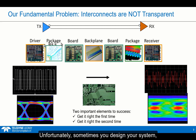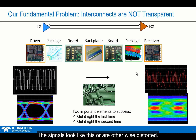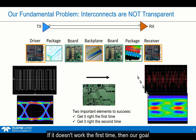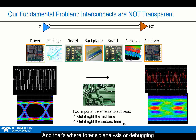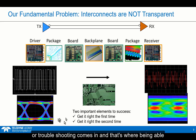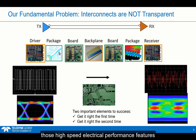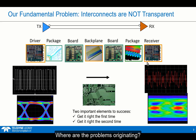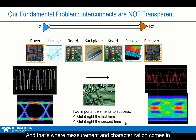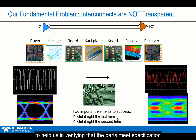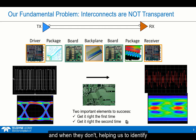Unfortunately, sometimes you design your system, get the components, build it, and it doesn't work. The signals look distorted. If it doesn't work the first time, then our goal is to get it right the second time, and that's where forensic analysis, debugging, or troubleshooting comes in. That's where being able to measure the signals and measure the qualities of the interconnects are so important — we want to look at the high-speed electrical performance features of the interconnects to identify where the weak links are and where the problems originate. That's where measurement and characterization comes in, helping us identify the root cause of the problems.